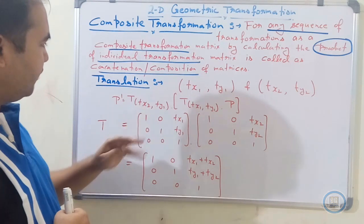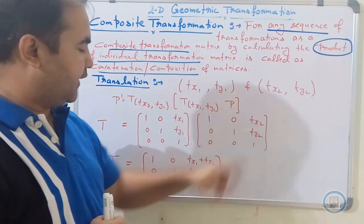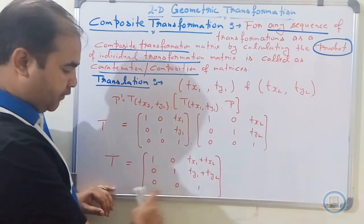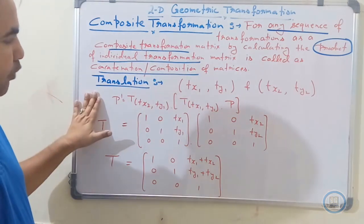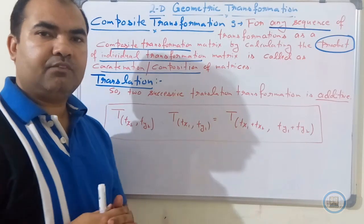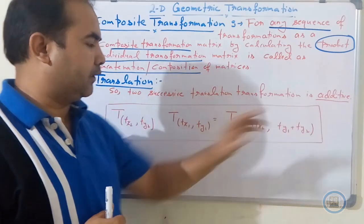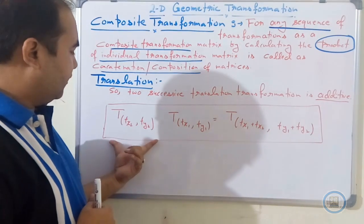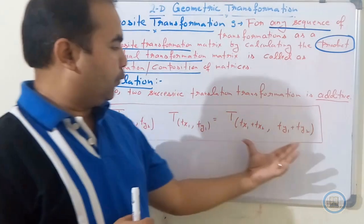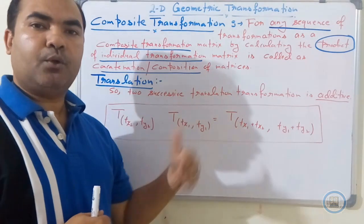The composite matrix for translation can be written as a single matrix: [1, 0, tx1+tx2 / 0, 1, ty1+ty2 / 0, 0, 1]. So the composite matrix for translation, when having more than one translation for a single object, shows that two successive translation transformations are additive in nature — that is, tx1 plus tx2, and ty1 plus ty2.